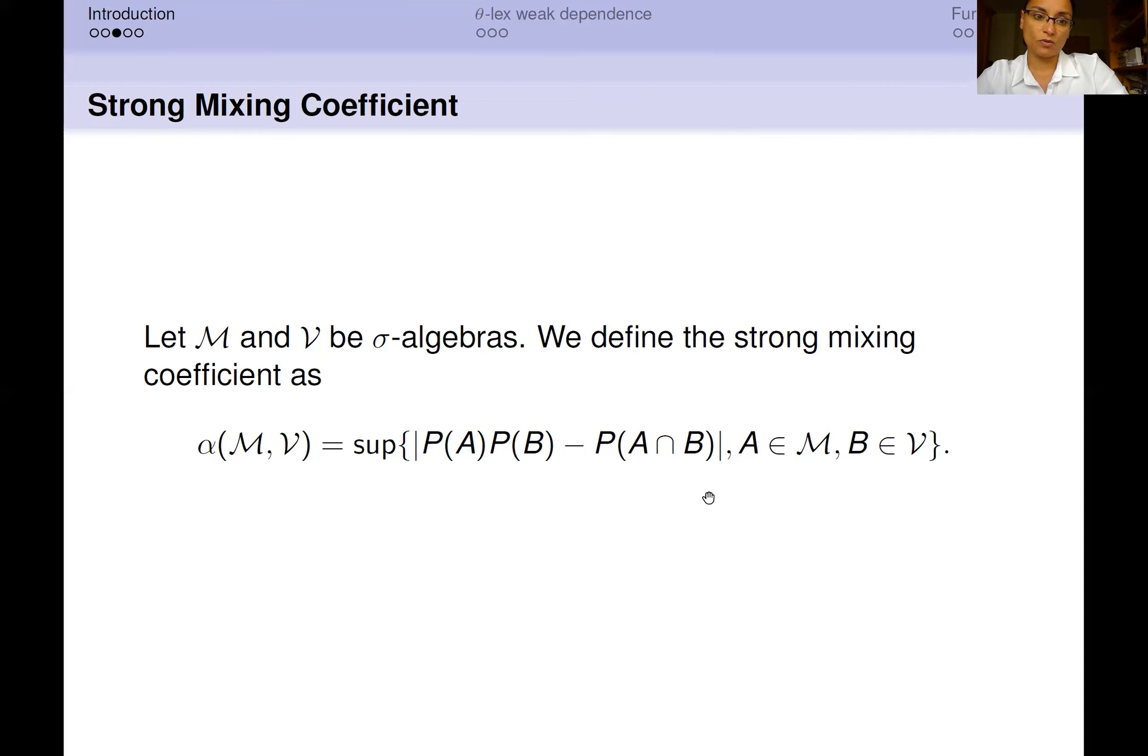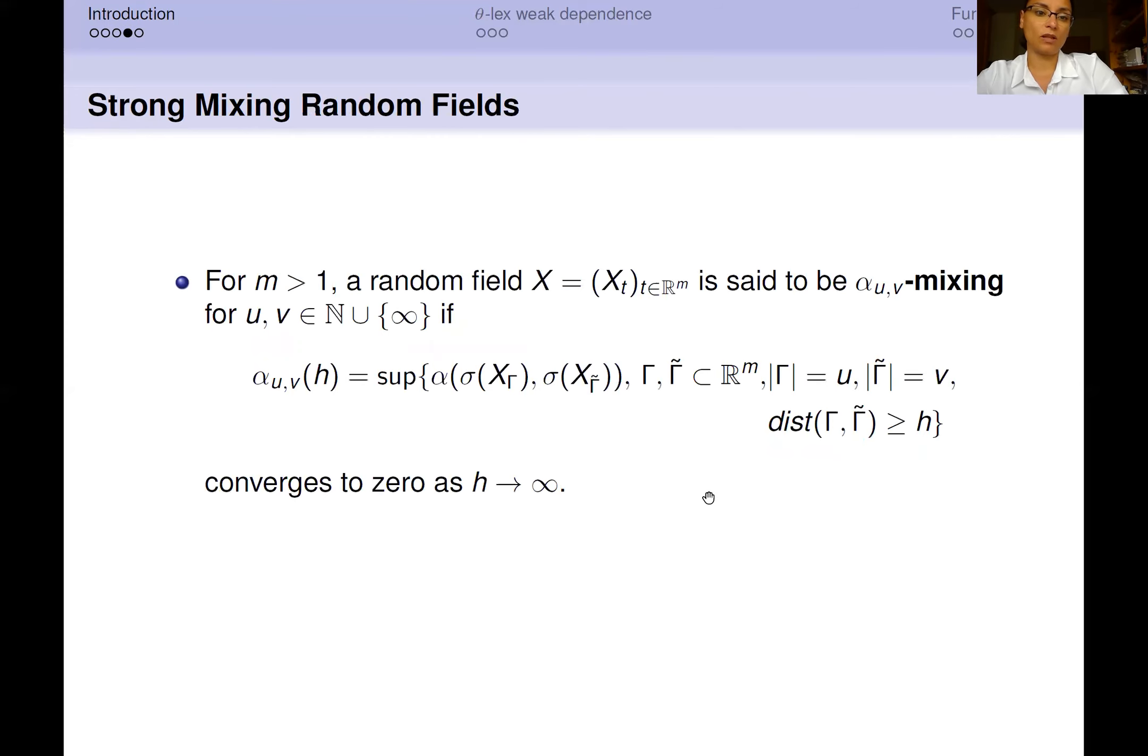Once we have introduced what the strong mixing coefficient is, I would like to talk about the definition of strong mixing random fields. So assume we are interested in analyzing the asymptotic dependent structure of a field X that is defined on an index set ℝ^M for M strictly greater than one.